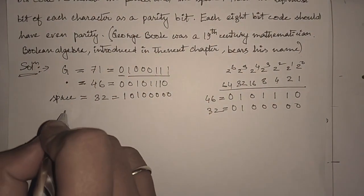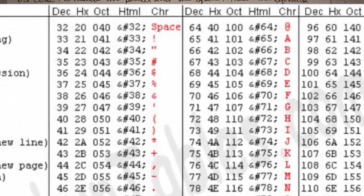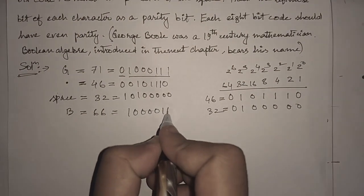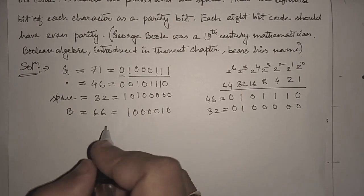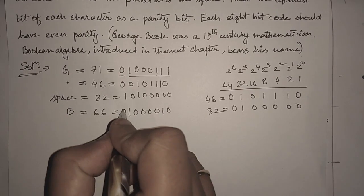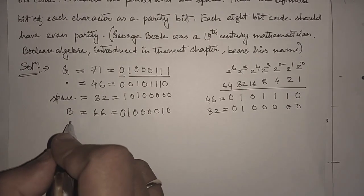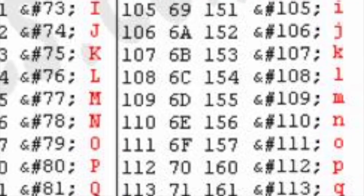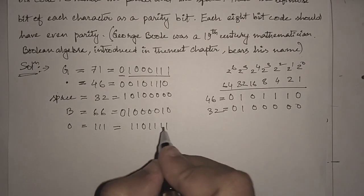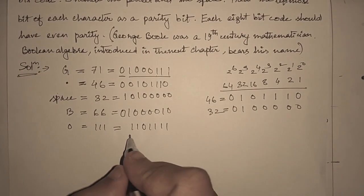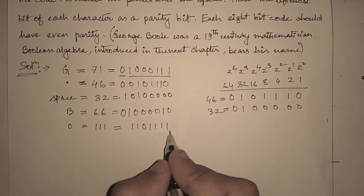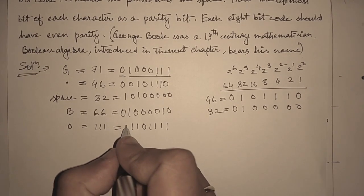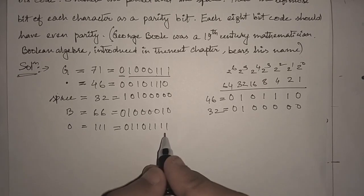Next, after space, we have capital B. Capital B decimal equivalent is 66. We can write it as 1000010, which is 66. Here we can see there are two number of ones, so the even parity bit will be 0. Then small o, small o is 111, which is 1101111. 111 can be represented as 64 plus 32 plus 8 plus 4 plus 2 plus 1, which equals 111. Here we have six number of ones, so the even parity bit will be 0. Then we have again o, which will be the same.